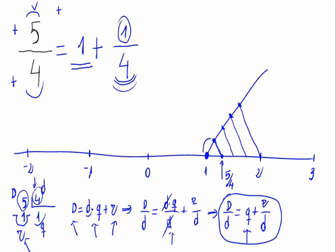I repeat, we just count one segment as the numerator is 1. If it were 2, we would have counted 2. So this is where we find 5 fourths on the number line.